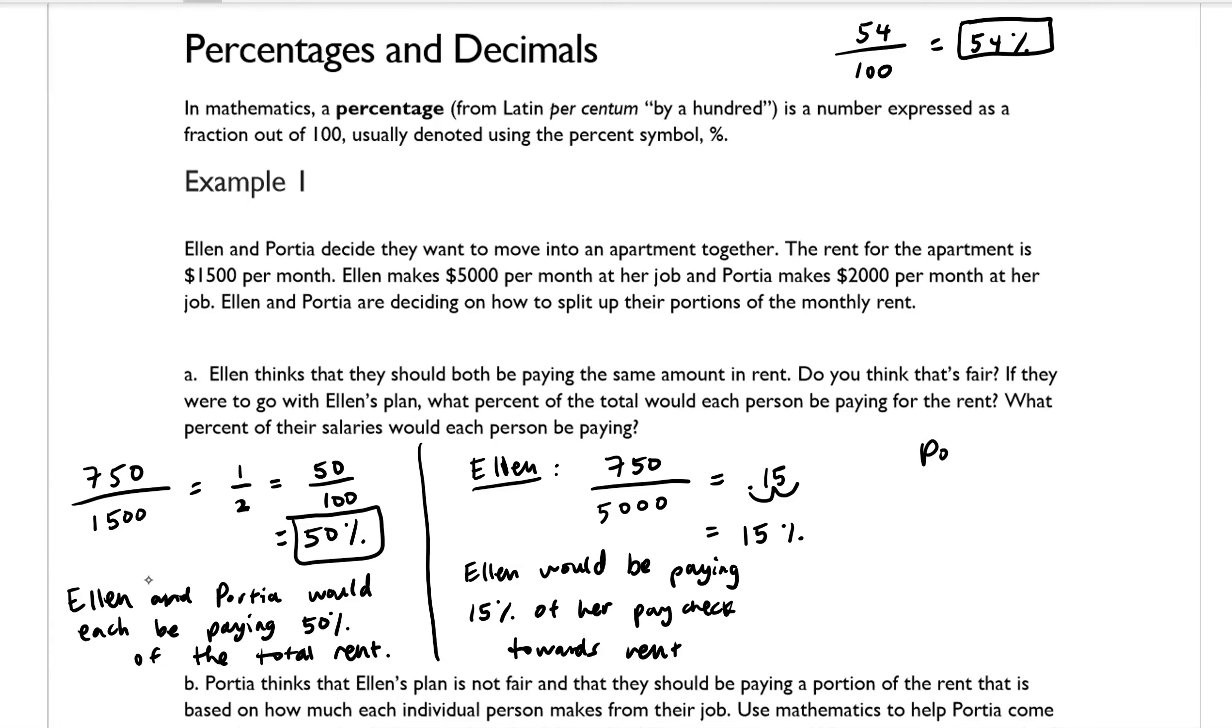And then if we're taking a look at Portia, she would be contributing $750 as well, but her total income on a monthly basis is $2,000. And so if you threw that into a calculator, that was equal to 0.375.